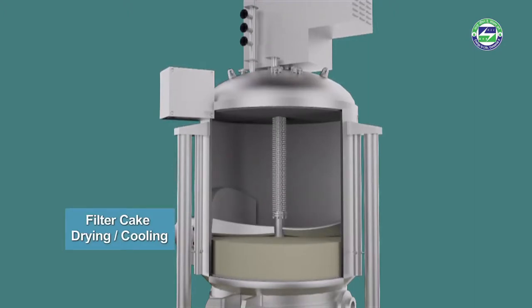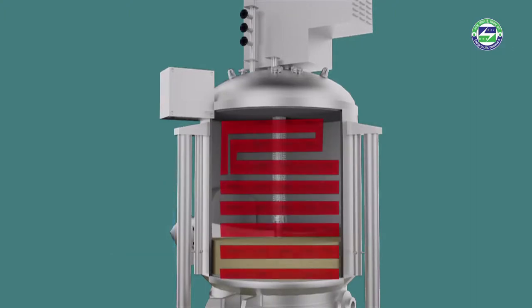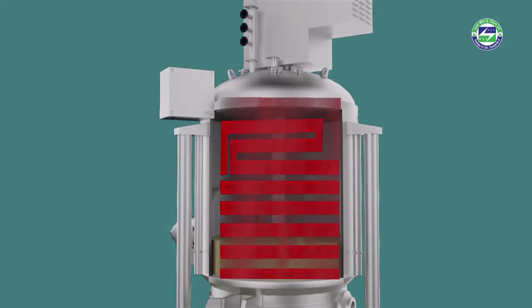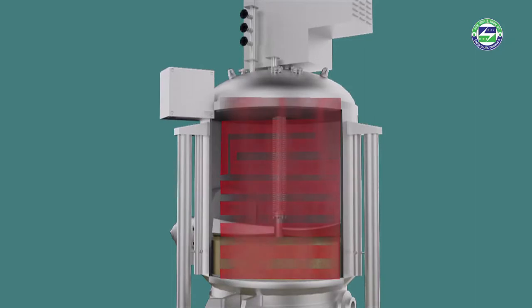During filter cake drying and cooling, the vessel surfaces — including the wall, base, and agitator — are heated. Pressurized gas is blown down through the solids and out of the filtrate lines, which drives the solids. The cooling process then follows.